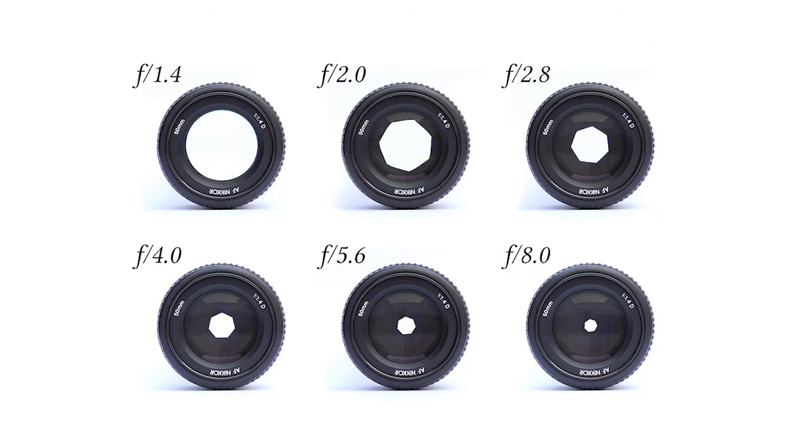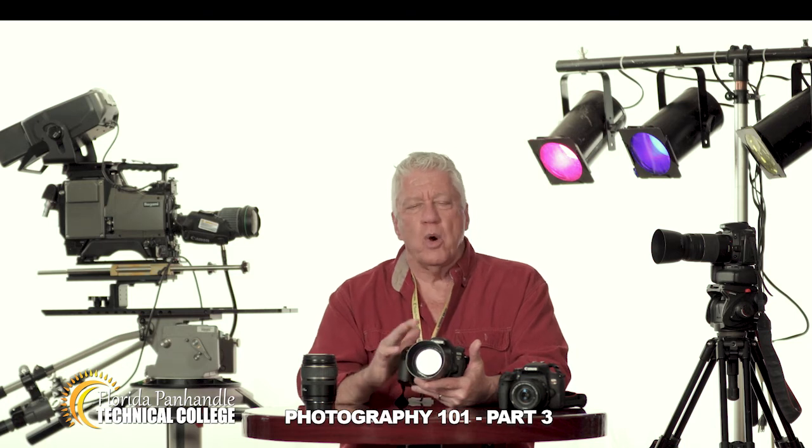The larger the aperture, or lens opening, the smaller the number — sort of backwards — and the more light enters the camera. Here's where you'll have to memorize a few numbers. We use what we call true stops, and these are f1, f1.4, f2, f2.8, f4, f5.6, f8, f11, f16, and f22.